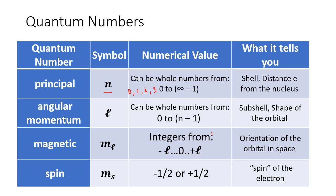The secondary quantum number, or angular momentum quantum number, uses the symbol cursive lowercase l. L depends directly on n and can be whole numbers ranging from 0 all the way to n minus 1. So if n equals 1, l can only be 0; if n equals 2, l can be 0 or 1. The angular momentum quantum number tells us the subshell and also tells us the shape of the specific orbital the electron lives in.